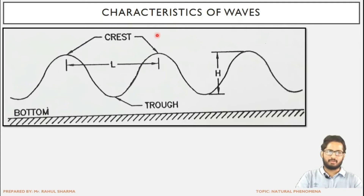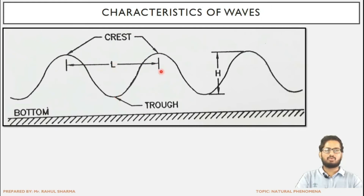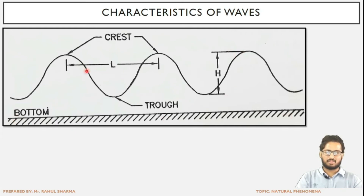The characteristics of waves include the following components. The crest is the topmost point of the wave. The trough is the bottom-most point of the wave. Capital L is the wavelength, which is the distance between two consecutive crests — that is, two successive topmost points. Capital H is the height, which is the elevation difference between crest and trough. The bottom refers to the sea bed.